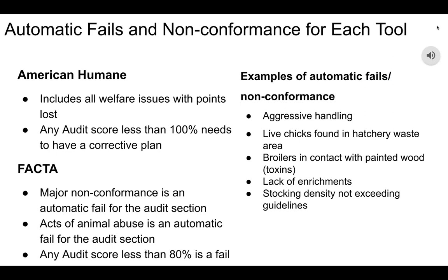For automatic fails and non-conformances for each tool: for American Humane, an automatic fail is any welfare issue that has points lost on it, and you need 100% in each audit area to have it passing; if not, you must come up with a corrective plan. For FACTA, their major non-conformance is an automatic fail for the audit sections — a good example would be animal abuse. Different from American Humane, you need less than 80% for it to be considered an automatic fail. Examples of automatic fails or non-conformances for both include aggressive handling, live chicks found in hatchery waste areas, broilers in contact with painted wood which are toxic, lack of enrichment, and stocking density not exceeding guidelines.